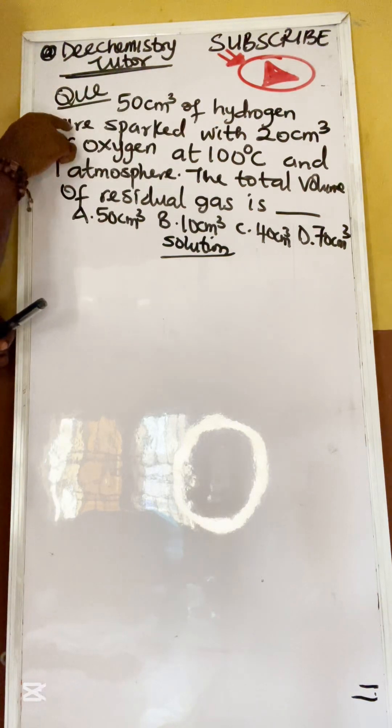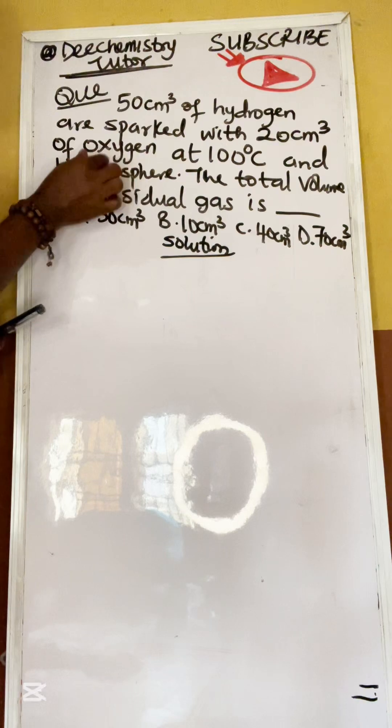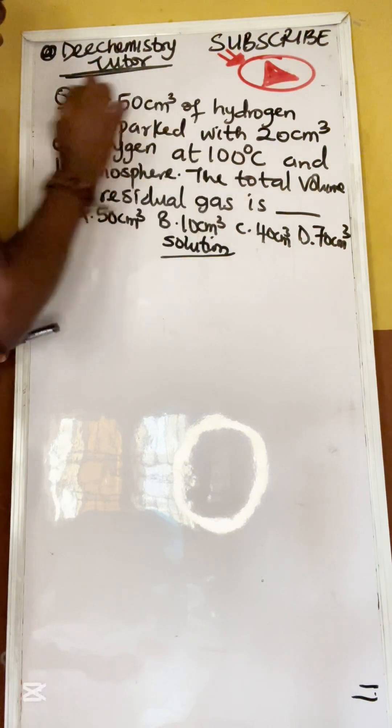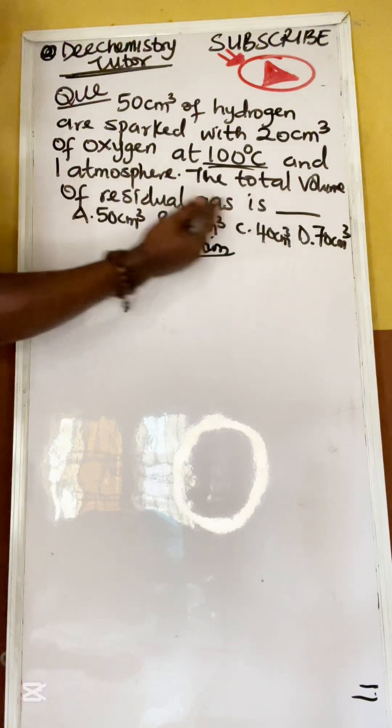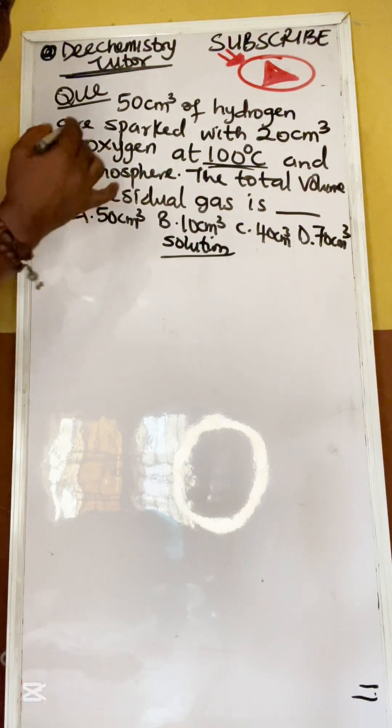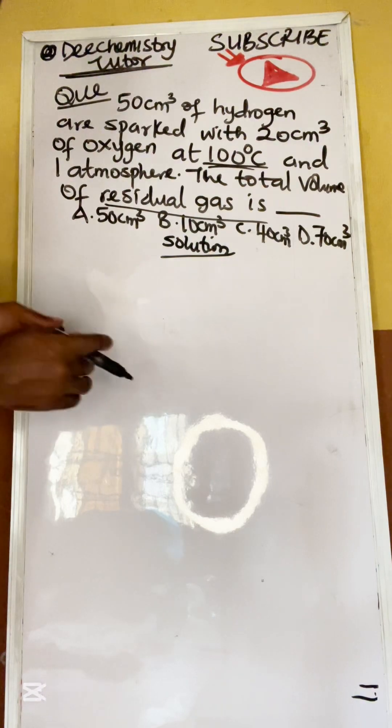It says that 50 cm³ of hydrogen is sparked with 20 cm³ of oxygen gas at 100 degrees Celsius. This is very important. Calculate the total volume of residual gases. This is a very common exam question that you have to know. Let's go.